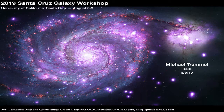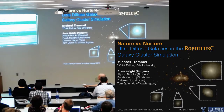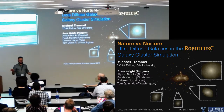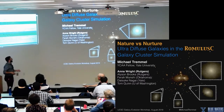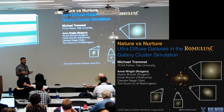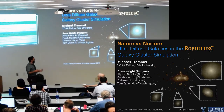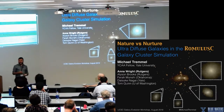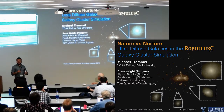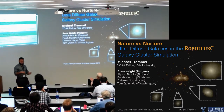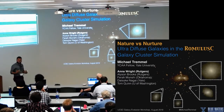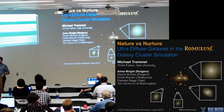Today I'm going to talk about ultra-diffuse galaxies, their formation and evolution in cluster environments using the Romulus C Galaxy Cluster Cosmological Simulation — one of the only cosmological simulations of a galaxy cluster with full hydro that can actually resolve dwarf galaxies self-consistently. This will be the first self-consistent study of UDG formation in a cluster environment.